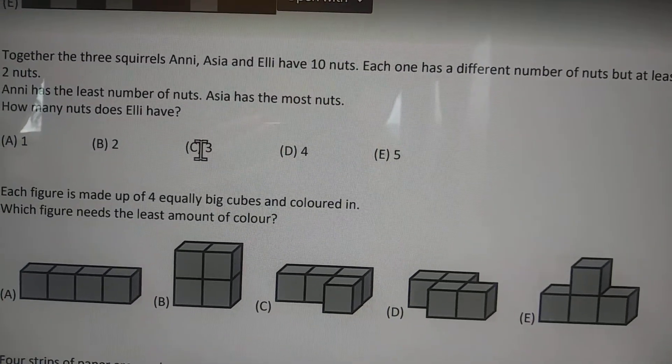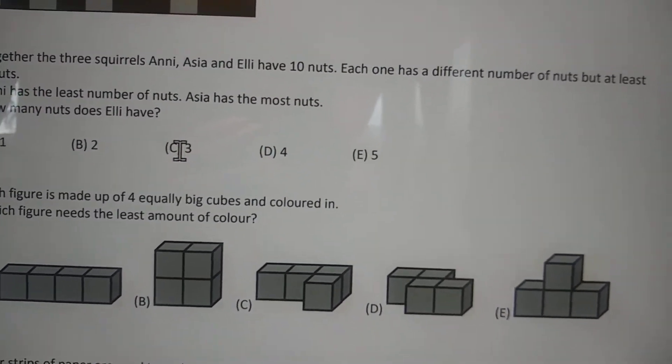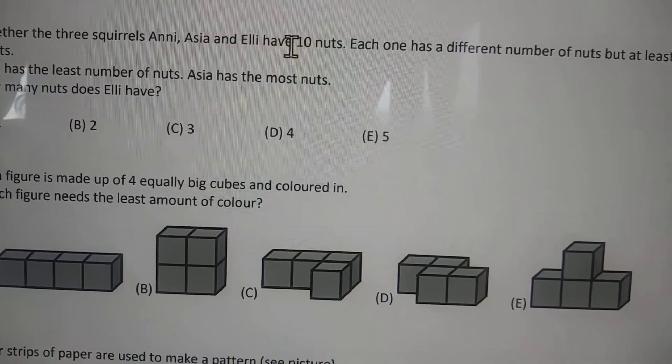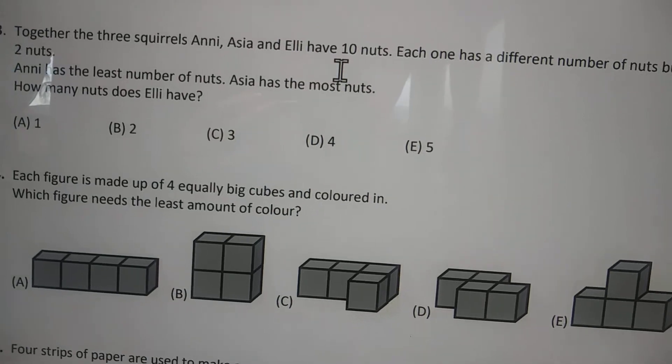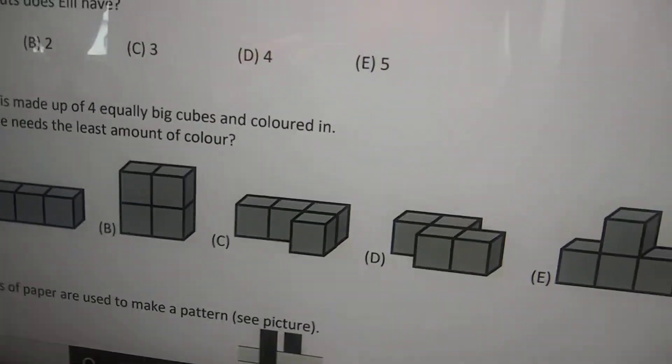Let's see three. If Eli has three nuts, Annie can have two nuts—that'll equal five nuts. And if Asia has five nuts, then all together that'll equal ten, which is correct. You want to make sure you have that written down somewhere. C is a pretty good answer.